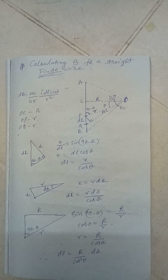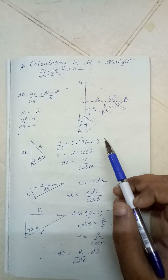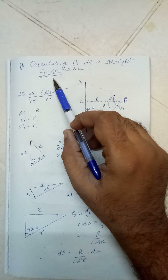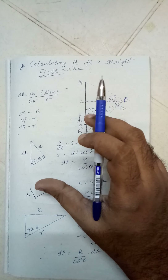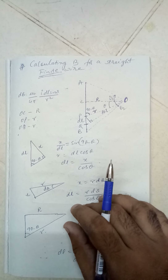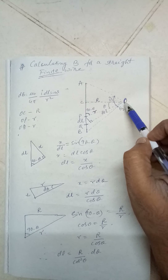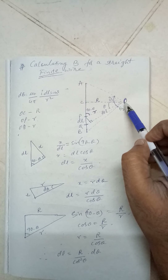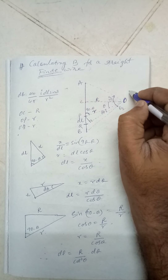Let's discuss one of the applications of Biot-Savart's law. We want to find the magnetic field — the magnetic induction B — of a finite wire, which is a straight wire of known length L. The situation is: there is a wire, and at point O we want to find the magnetic field. The current flows in the vertical direction, and you can see the sense of the magnetic field.